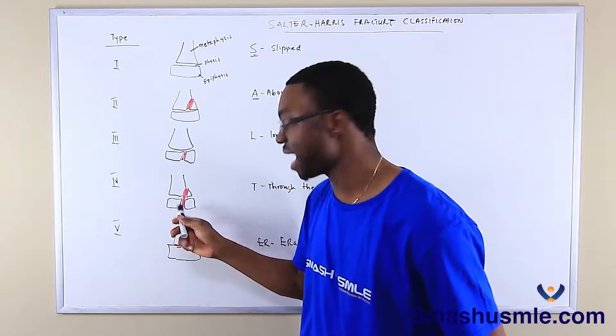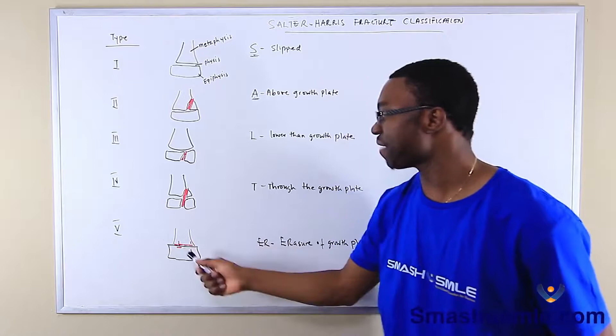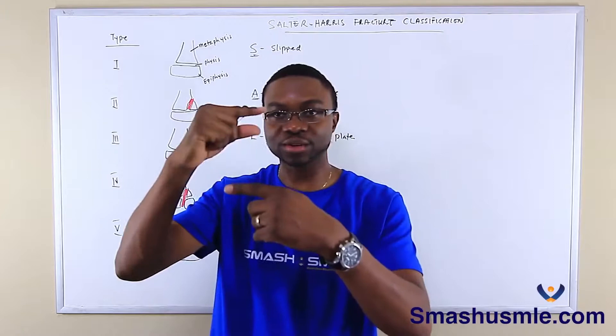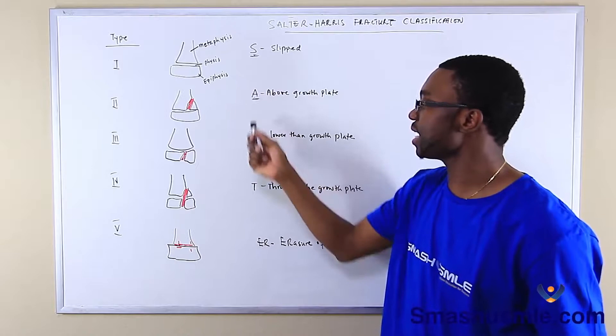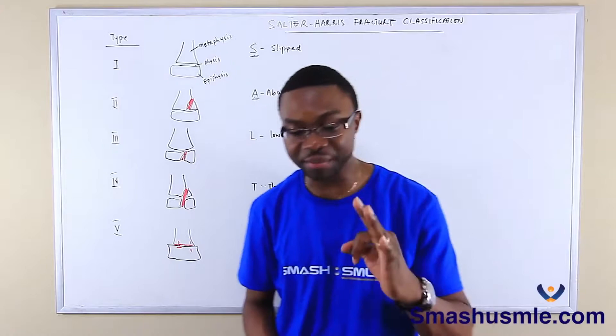Last but not least is type five. Type five is E-R — erasure of the growth plate. When you don't see the growth plate anymore, that is ER. So spelling out S-A-L-T-E-R, the ER stands for erasure of the growth plate.